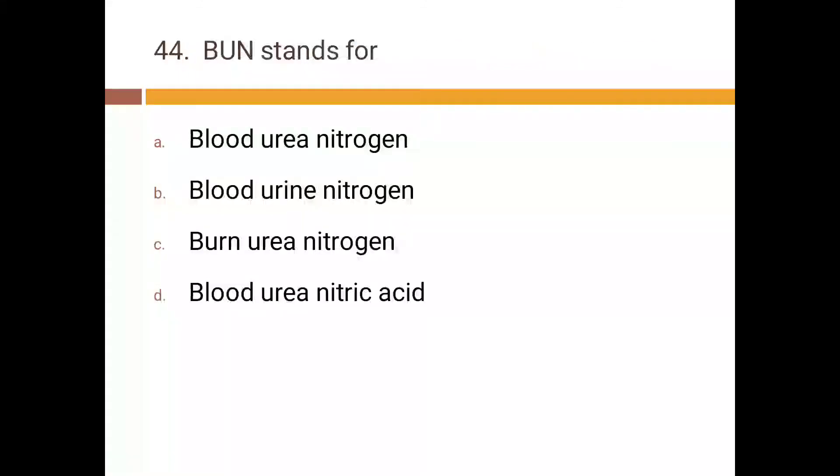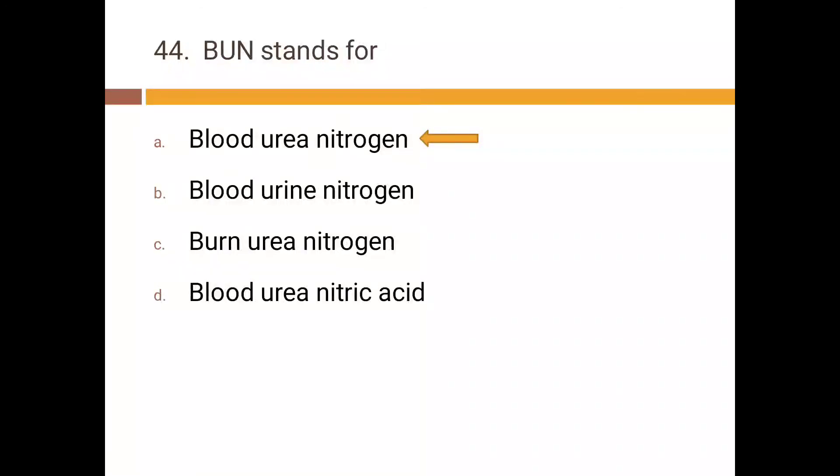BUN stands for: a) blood urea nitrogen, b) blood urea nitrosine, c) bond urea nitrogen, d) blood urea nitric acid. Urea synthesis occurs in: a) kidney, b) liver, c) stomach, d) spleen. Correct answer is b) liver.